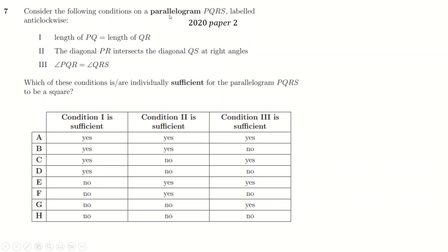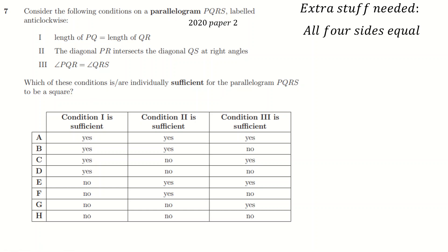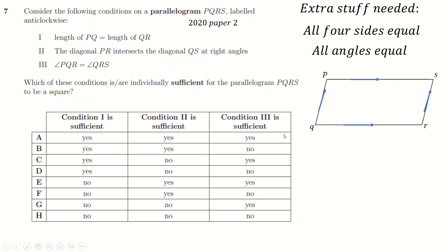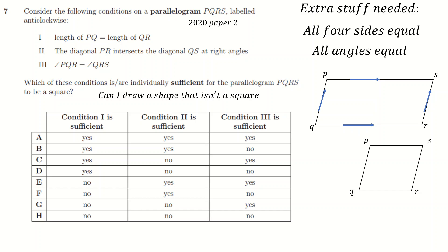Another question, again about parallelograms: which of these conditions is sufficient to turn our parallelogram into a square? Think about what extra things you need — you need more sides to be the same, and all angles to be 90 degrees. For option A, PQ equals QR: does that guarantee a square? No, because you can just make a rhombus instead. The basis of the question is: can I draw these things and not make a square? If I can, it's not sufficient. And yes, I can just draw a rhombus, so this is not sufficient to be a square.